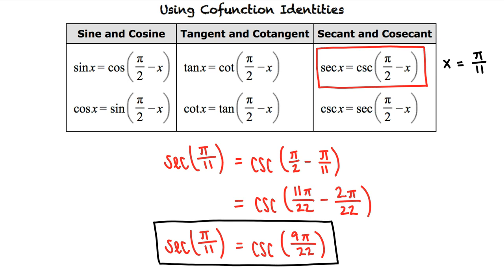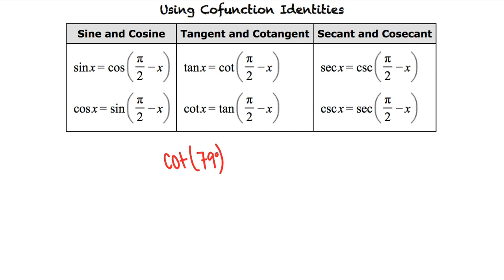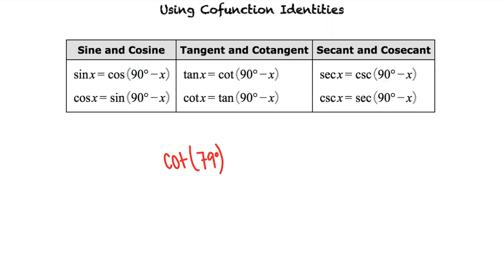Let's take a look at one more example. Use a co-function to write an expression equal to cotangent of 79 degrees. This problem is in units of degrees rather than radians. Can we still use the same co-function identities? We can. Since pi-halves radians equals 90 degrees, we can rewrite our co-function identities accordingly. We can use the identity cotangent of x equals tangent of 90 degrees minus x, with x equaling 79 degrees.